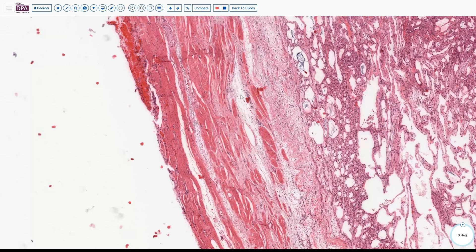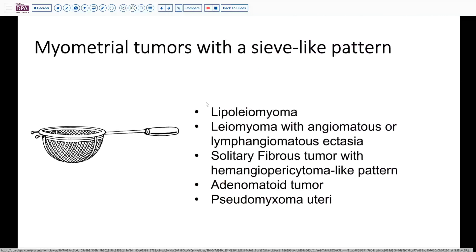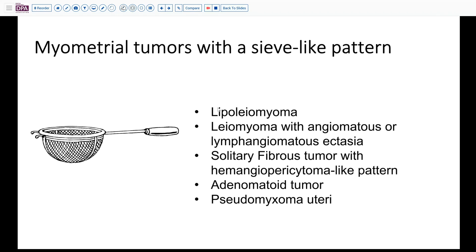Let's think for a minute about what could be causing this. I will note that this is a distinct morphology from that of the patient's serous carcinoma, so it doesn't look to be related to the patient's serous carcinoma directly in the sense of being the same lesion. The pattern that I think we saw is what is commonly referred to as a sieve-like pattern.